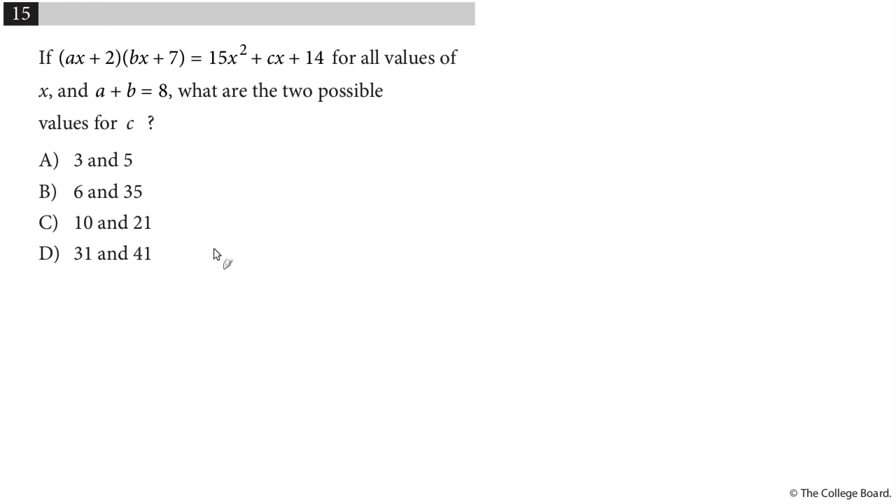All right, so after that problem we just had, where it was kind of crazy, this one actually shouldn't be too bad. So I have an a, I have a b. It looks really rough. But I'm just going to dive in and multiply this through. So using FOIL, I can do area model, I can do whatever you want. ax times bx would be abx squared. ax times 7 would be plus 7ax. 2 times bx would be plus 2bx. And 2 times 7 is 14. Now notice they told us that it's equal to this expression on the right. So that will equal 15x squared plus cx plus 14.